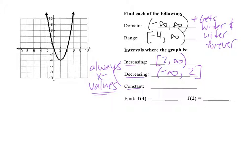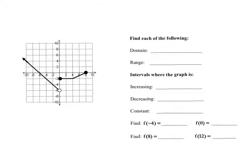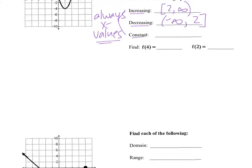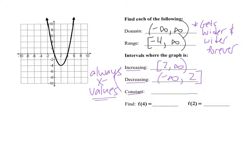Where is this graph constant? On this parabola there is no constant area — it's either decreasing, and once it hits the bottom point it starts immediately increasing. An example of a constant section would be a part that's completely flat, not increasing or decreasing. We'll talk more about that tomorrow in class. For this parabola, there is no area where it's completely flat.